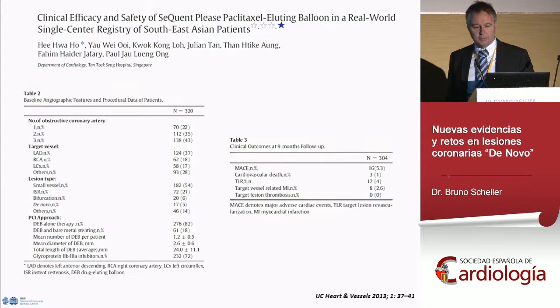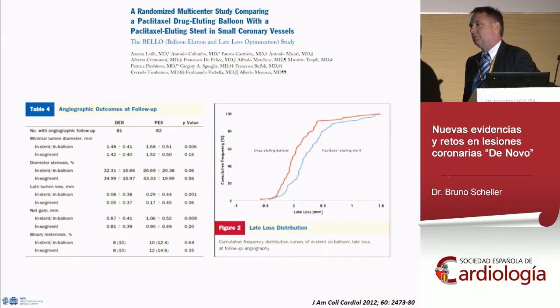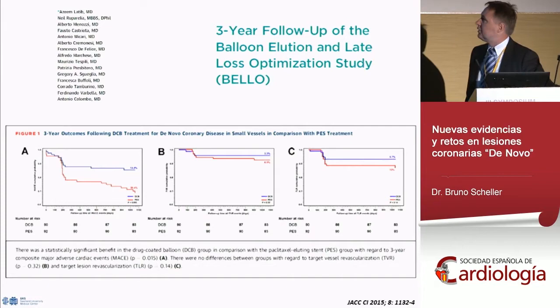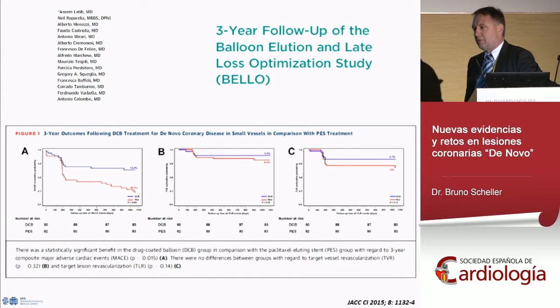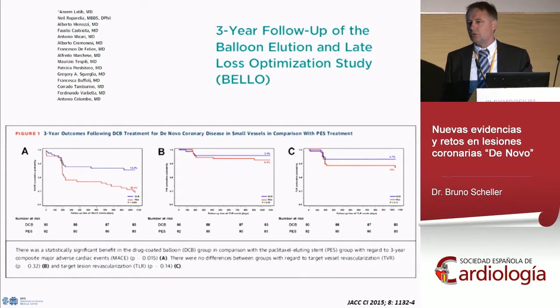Randomized data are limited. The most notable is the DIBELLO trial from Antonio Colombo's group — small vessel disease treated with DCB only or first-generation drug-eluting stents. In the DCB group, stent crossover rate was again 20%, meaning 80% could be treated without additional stent implantation, and in this group late lumen loss was close to zero. At three-year follow-up, the curves divide in event rates, and this is related not just to target lesion revascularization but to death or myocardial infarction. Of course one can argue this involved TAXUS stents with known higher long-term event rates.